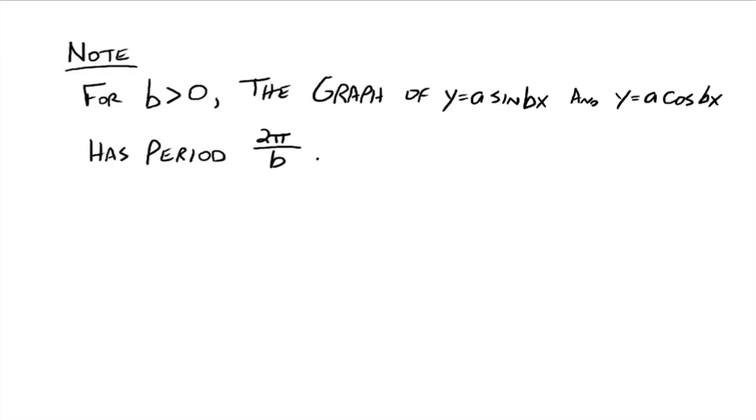Alright, so make a little note. For b greater than 0, the graph of a times sine bx and y equals a times cosine bx, the graphs of those things have period 2 pi divided by b. And when it's just cosine x, b would be 1, it would have 2 pi divided by 1, so the period would be 2 pi, which is what we've had. But a minute ago, we had a 2 right in front of that x, so b was 2, so 2 pi divided by 2, which would be pi.